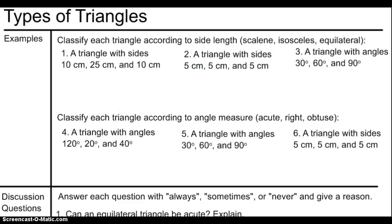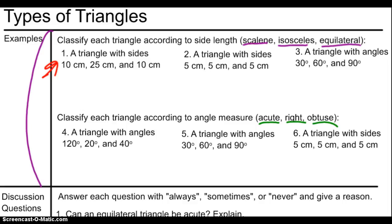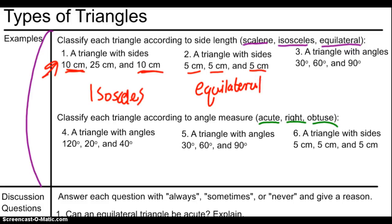Flip to the other side of your notes where it says types of triangles — we're going to do these six examples. Pause the video and classify the first three as either scalene, isosceles, or equilateral, then classify the next three as either acute, right, or obtuse. A triangle with sides 10 cm, 25 cm, and 10 cm has two congruent sides, so that's isosceles. A triangle with sides 5 cm, 5 cm, and 5 cm — that's equilateral. A triangle with angles 30, 60, and 90: all angles are different, so the sides will also all be different — that's scalene.